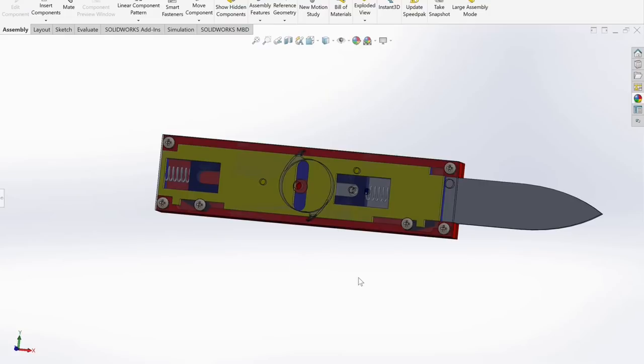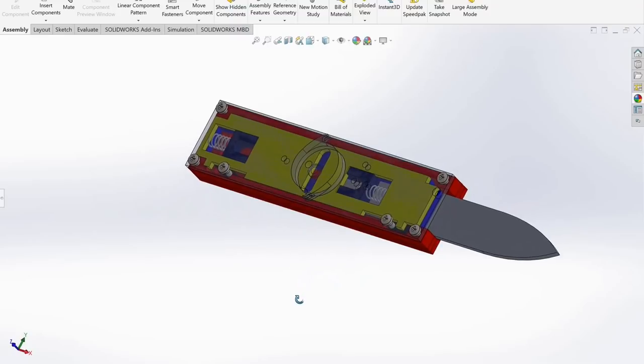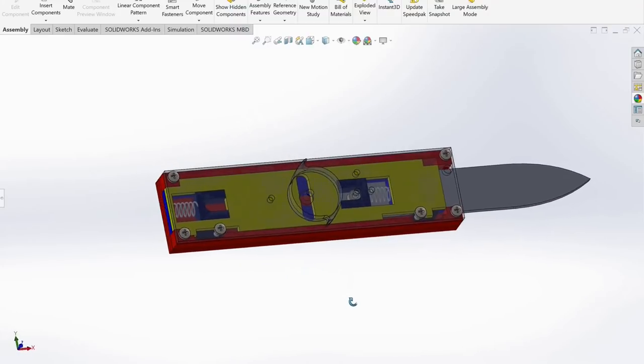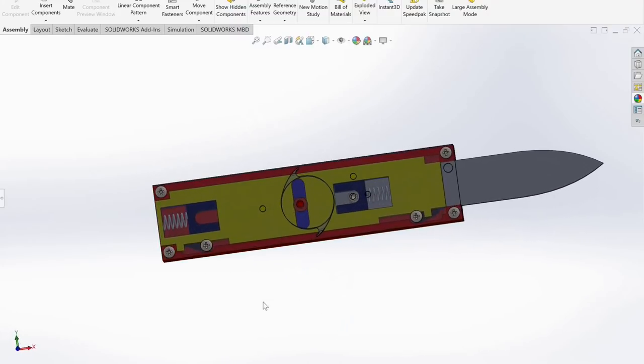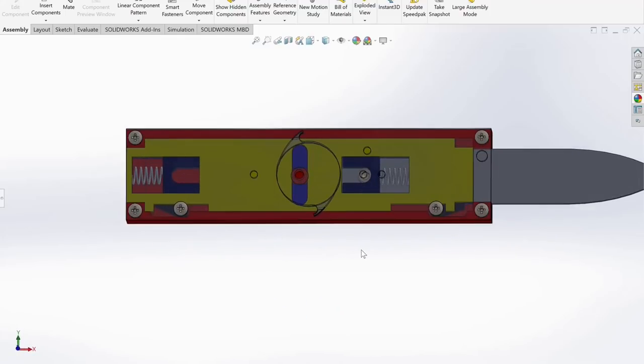Hi there! Today I'm going to show you how this dual action hidden blade mechanism from Assassin's Creed actually works. To do that I'll show you a prepared animation and then we'll go through the mechanism step by step. But let's watch the animation first, shall we?